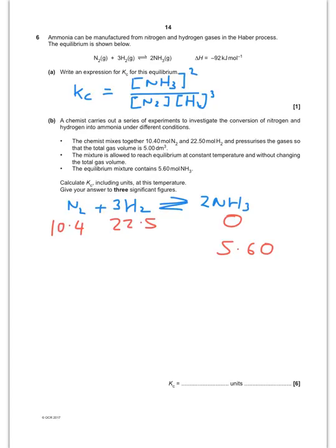So you can see it is a 1 to 2 reaction. So I must have lost 5.6 divided by 2 moles of nitrogen, which is 2.8. So I'm left with 7.6 moles of nitrogen. For hydrogen, it's a 2 to 3. So if I take 5.6 divided by 2 and times by 3, that gives me 8.4. So I've lost 8.4 moles of hydrogen, so I'm left with 14.1 moles of hydrogen.